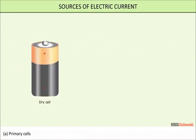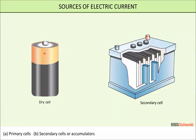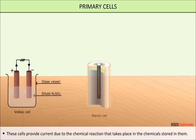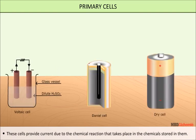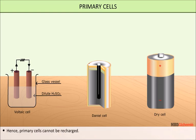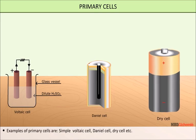Cells are of two kinds: primary cells and secondary cells, or accumulators. Primary cells provide current as a result of the chemical reaction that takes place in the chemicals stored in them. The chemical reaction taking place in a primary cell is irreversible — once the chemicals are used, the primary cell stops producing electricity. Hence, primary cells cannot be recharged. Examples of primary cells are the simple voltaic cell, Daniel cell, dry cell, etc.